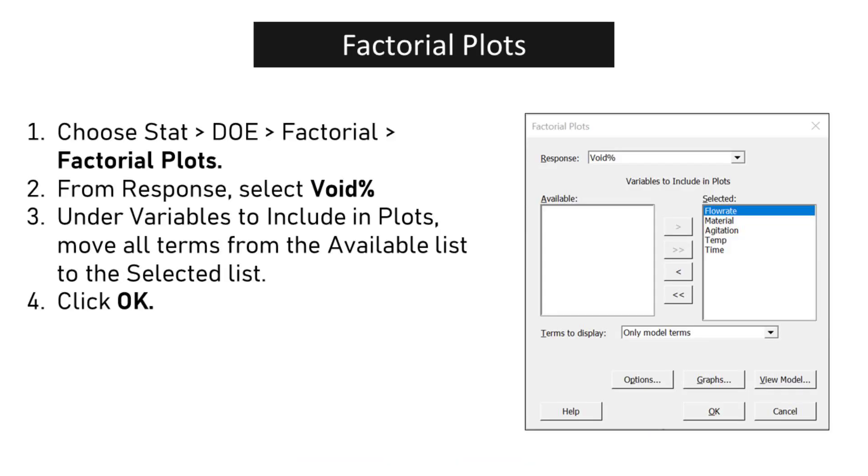Choose STAT, DOE, Factorial, Factorial Plots. From response, select void percent. Under variables to include in plots, move temperature and time from the available list to the selected list. Click OK.